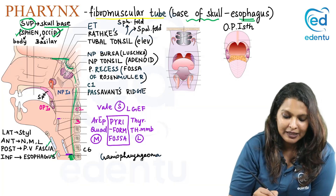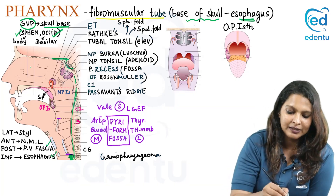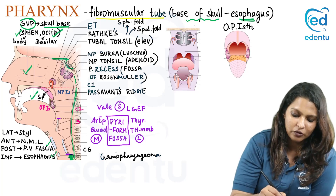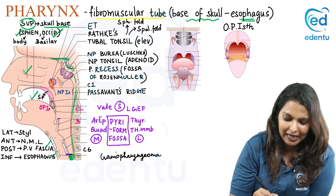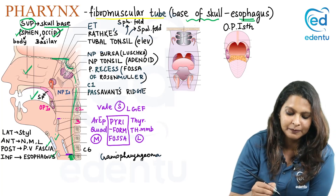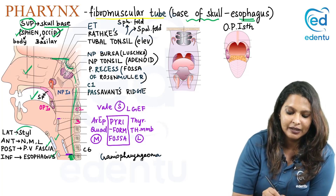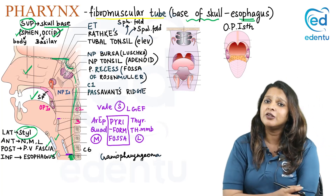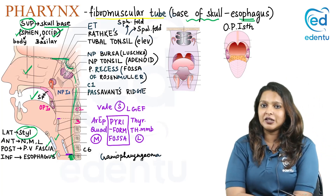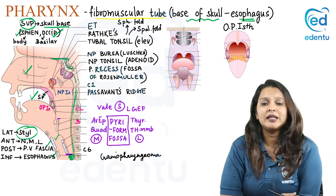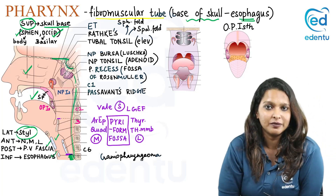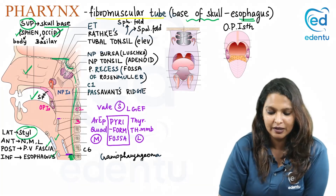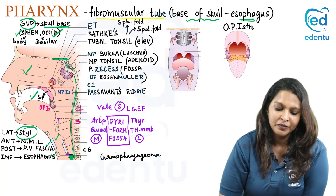Anteriorly the pharynx is related to three cavities: the nasal cavity, oral cavity, and larynx. Laterally it is related to the styloid process, the neurovascular structures, and the muscles of the styloid apparatus.